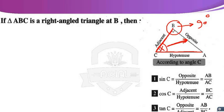Sine C equals the ratio between the opposite side length over the hypotenuse. The opposite of angle C is line segment AB, over the hypotenuse CA. Then sine C equals AB over AC. Cosine C equals the ratio between the adjacent over the hypotenuse. The adjacent of angle C is line segment BC, over hypotenuse AC. Then cosine C equals BC over AC. Tan C equals opposite over adjacent, so tan C equals AB over BC.